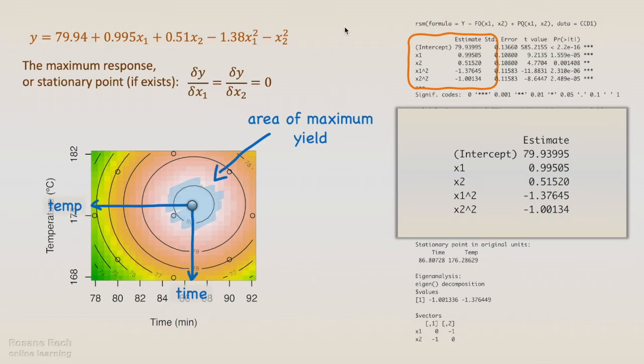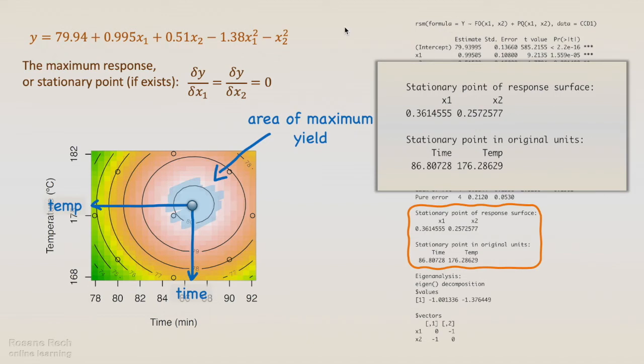Fortunately, we don't need to derive the equation by ourselves. R does it for us. We can see the stationary point coordinates, both encoded and natural variables, in the RSM output.